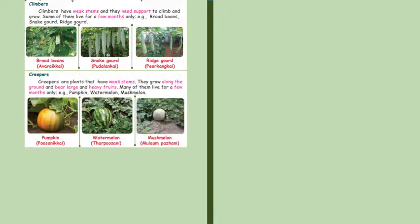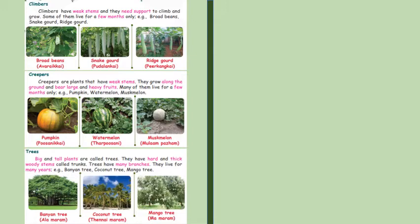Creepers are plants that have weak stems. They grow along the ground and bear large and heavy fruits. Many of them live for a few months only like pumpkin, watermelon and muskmelon.